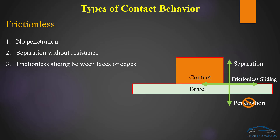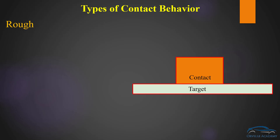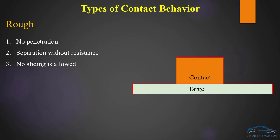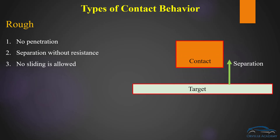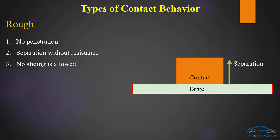Now let us see how rough contact works. In case of rough contact the penetration is not allowed, but separation without resistance is allowed. At the same time no sliding is allowed for rough contact. Graphically you can see the separation is allowed — the contact can leave the target surface — but penetration is not allowed, and rough contact does not provide any type of sliding.